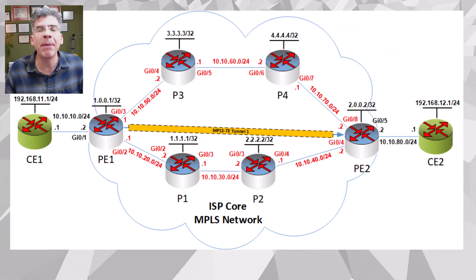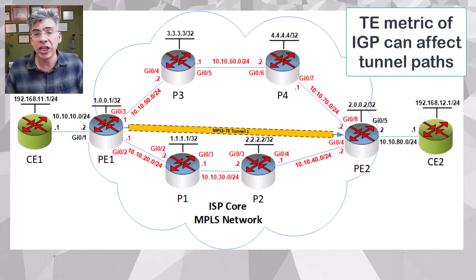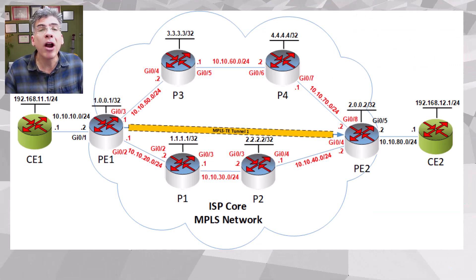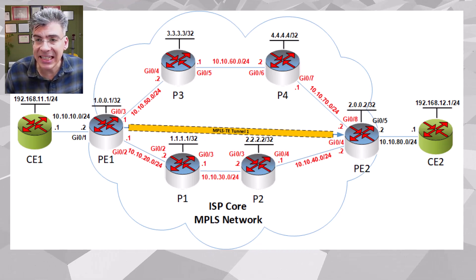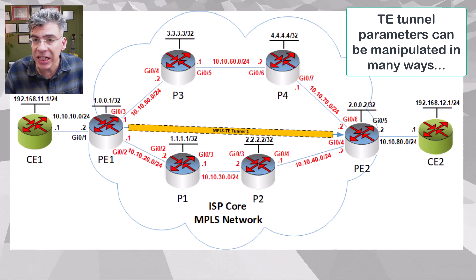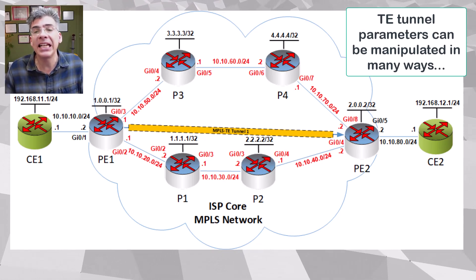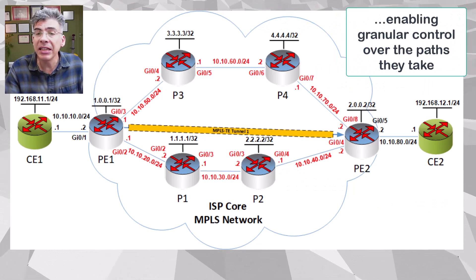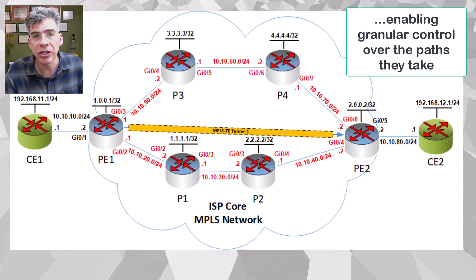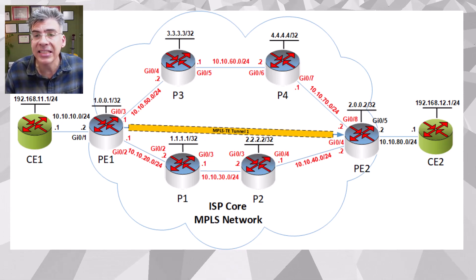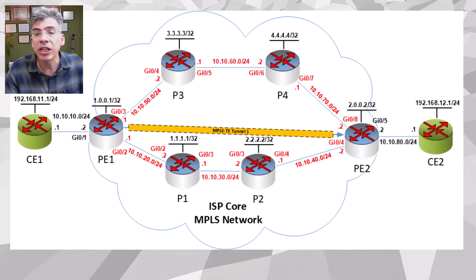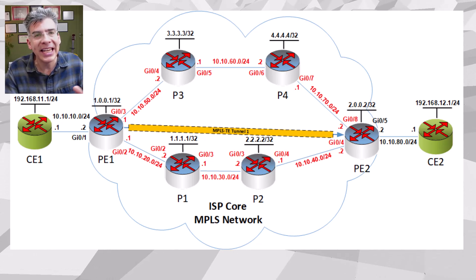We've tweaked this a bit by modifying the TE metric, thus differentiating the path the tunnel will take from regular traffic. But the major value and the primary benefit that we get from MPLS TE is the fact that we can create traffic engineering tunnels through our MPLS topology that can be manipulated in a wide variety of ways, thus enabling very granular control over the actual path that those tunnels take through our topology. Unlike packet routing, TE tunnels can continually be directed and redirected through the MPLS TE topology based on constraints and parameters, many of which we have not yet examined.